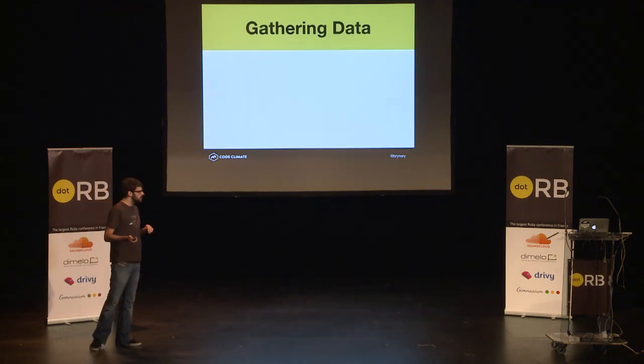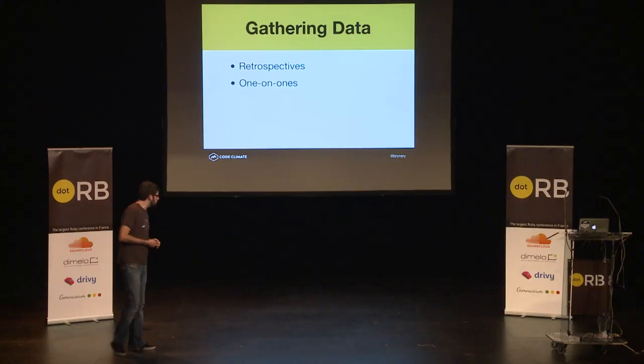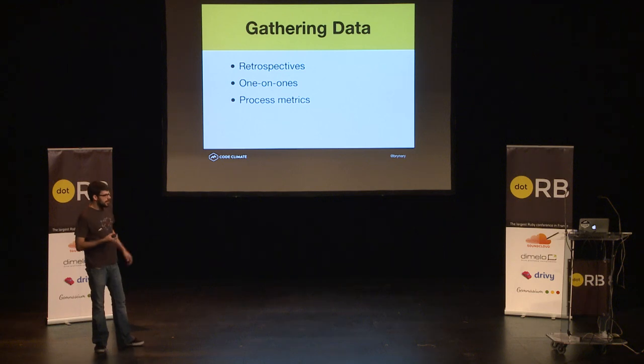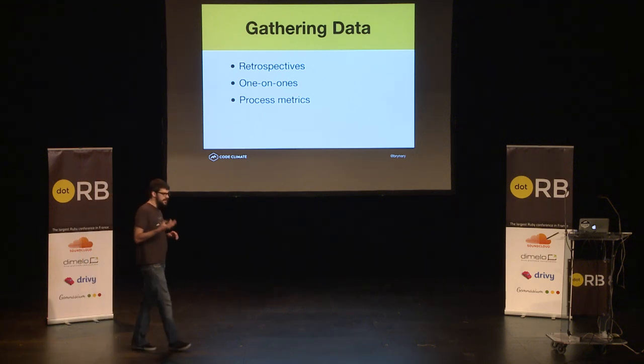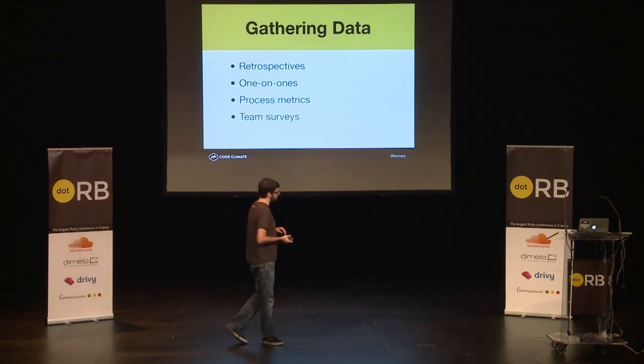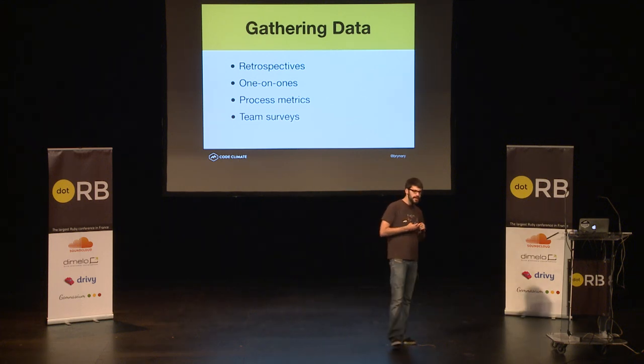We'll look at how. I would start with gathering data. Every project has different aspects, even if the resulting problem is the same — which is code quality and its downstream effects. You can gather data in lots of ways: retrospectives, one-on-ones between managers and their direct reports. You can collect process metrics like lead time, cycle time, velocity. You can survey your team — this is a really underused, simple tactic. Have you ever had a project where everyone felt it was going to be late but was afraid to say anything?